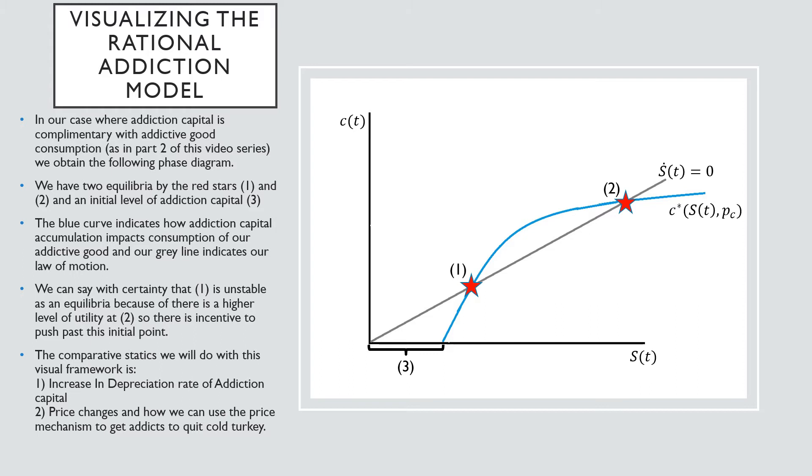This blue curve indicates how addiction capital accumulation impacts our consumption of the addictive good, and the gray line indicates the law of motion of addictive capital. We can say with certainty that one is an unstable equilibrium because there is a much higher level of utility which could be reached at point two, and there is incentive to push past point one.